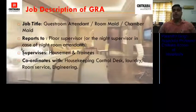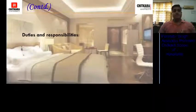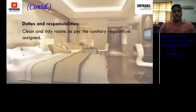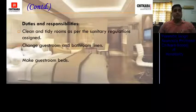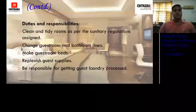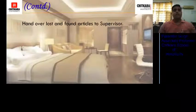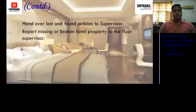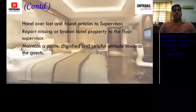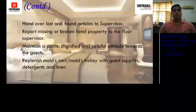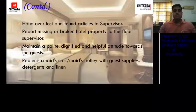The GRA coordinates with the housekeeping control desk, laundry, room service, and engineering. Duties and responsibilities include: cleaning and making rooms ready for sale; changing guest room and bathroom linen; making guest room beds; replenishing guest room supplies; being responsible for getting guest laundry processed; handing over lost and found articles to the supervisor; reporting missing or broken hotel property to the floor supervisor; and maintaining a polite, dignified, and helpful attitude towards guests. Replenish the maid's cart with guest supplies, detergents, and linen to avoid repeated trips to the floor pantry.